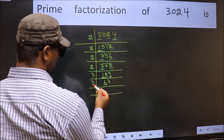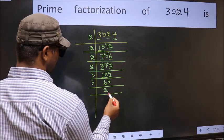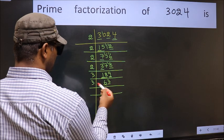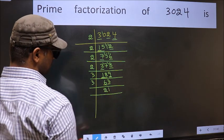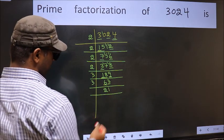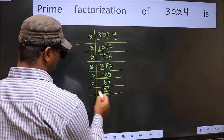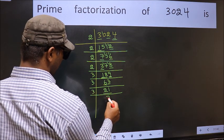Now to check whether 63 is divisible by 3 or not, add the digits: 6 plus 3 equals 9, and 9 is divisible by 3. So this number is also divisible by 3. So take 3 here. First number 6 — when do we get 6 in the 3 table? 3 times 2 is 6. The other number 3 — when do we get 3 in the 3 table? 3 times 1 is 3. Now here we have 21: 3 times 7 is 21.